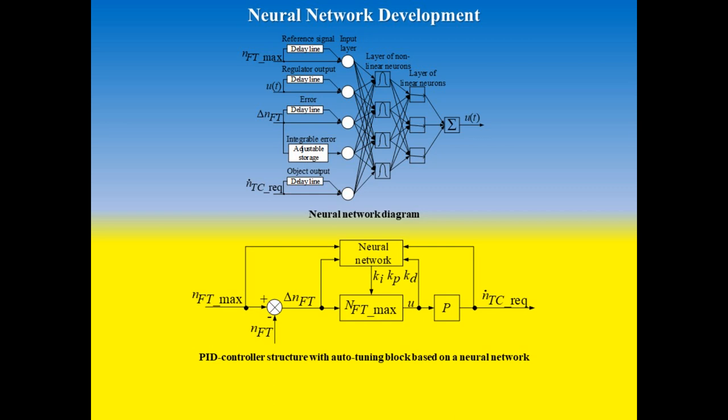The following sequences are used as neural regulator inputs: reference signal, a master sequence that determines the final state of the object, controller output, feedback from the controller output, object error, the difference between the reference signal and the real output of the object, integrable error, the error accumulated by the controller for the entire time of the object operation, and object output signal from the object output.